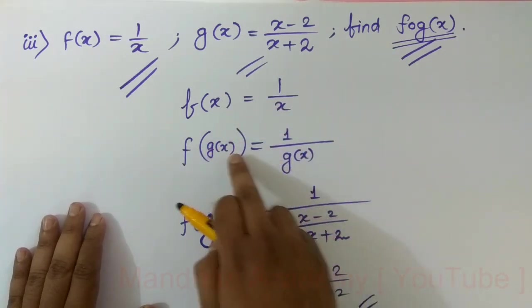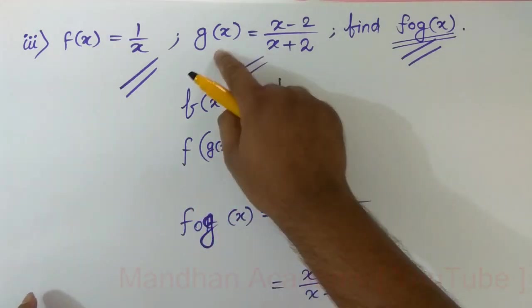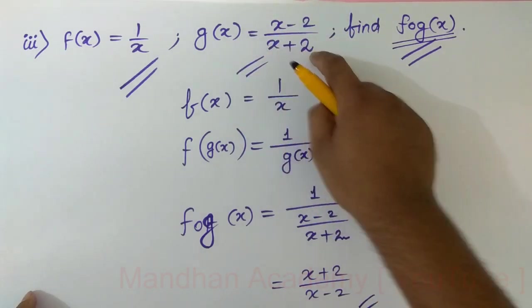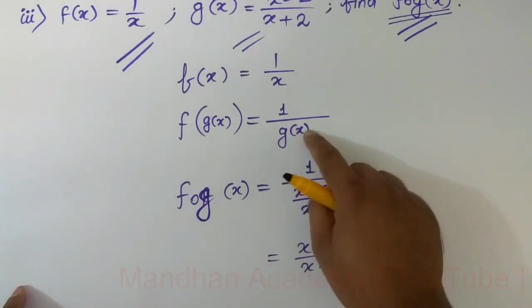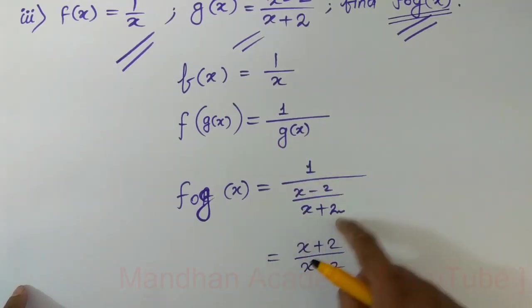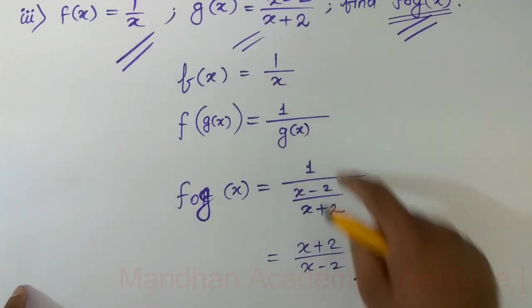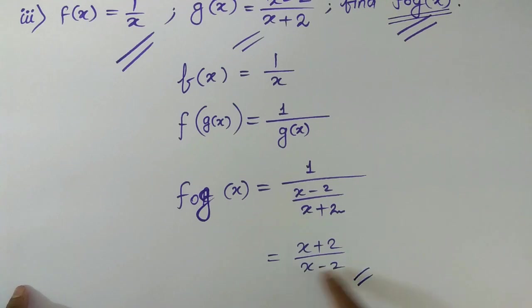Which you have done. Further, notice here: what is g of x? It is x minus 2 over x plus 2. So here you don't have any substitution. The third will go to first. I have already told you that the denominator goes to the numerator. The third will go to first. It will go to x plus 2 over x minus 2, and that's it.